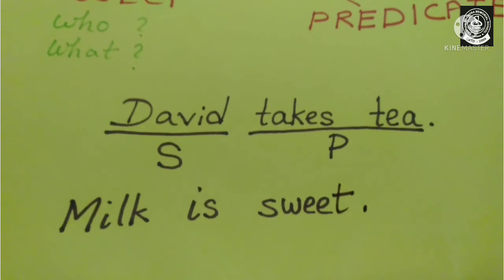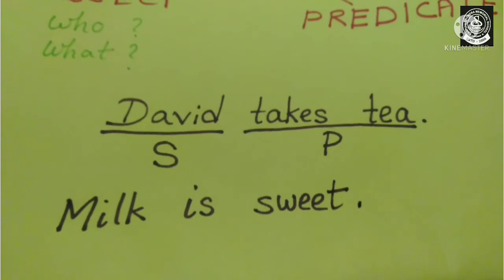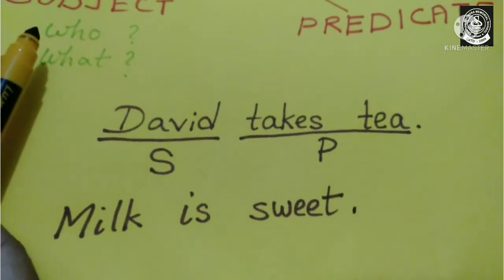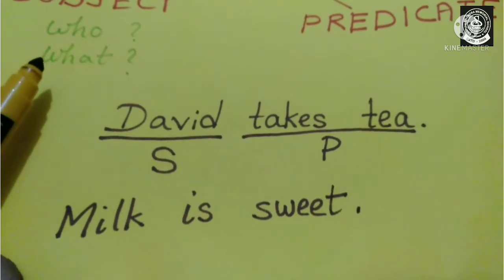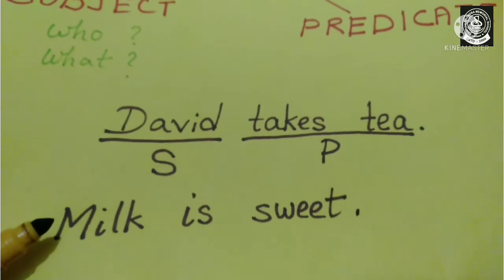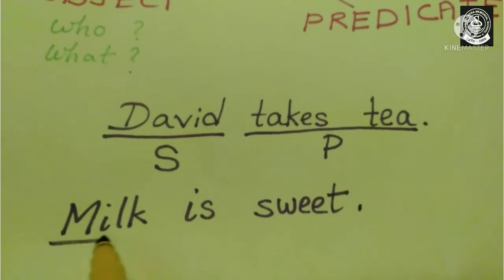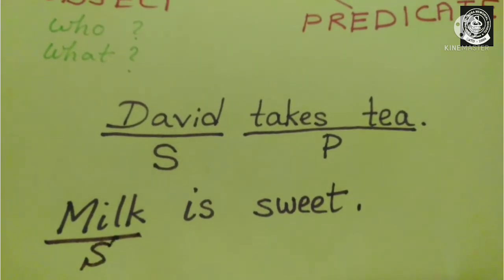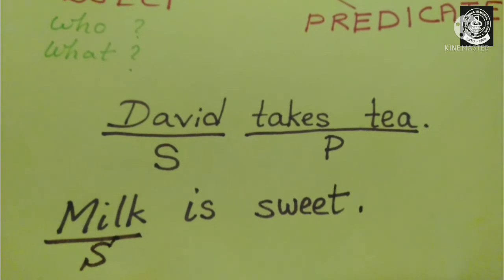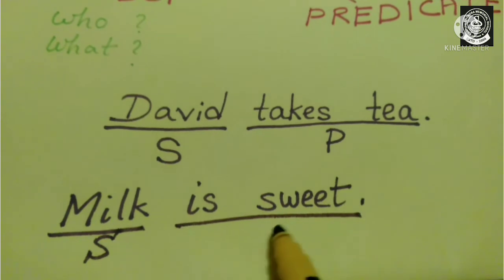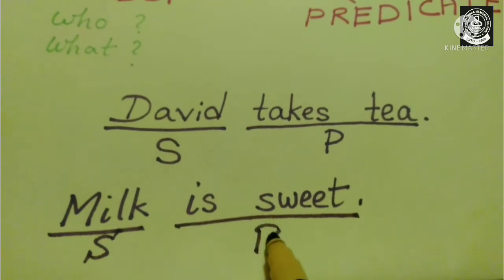Now here again, you have to ask question. About what are we talking? Look here children, we have to ask question either with who or what. So about what are we talking in this sentence? We are talking about milk. Therefore, milk is your subject here. It is the subject of the sentence. And rest of the part is the predicate. Is sweet is the predicate.